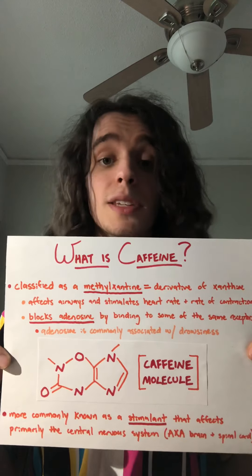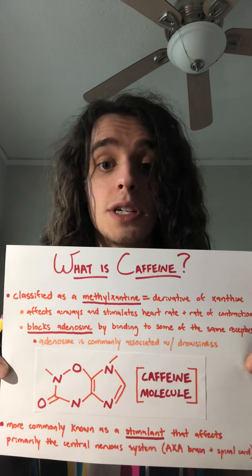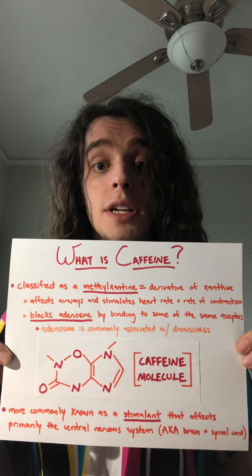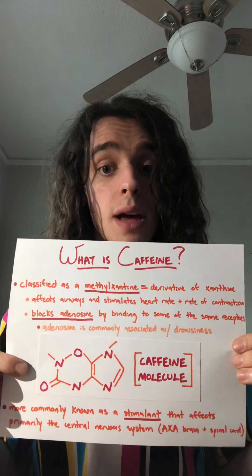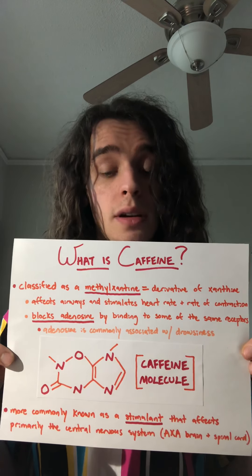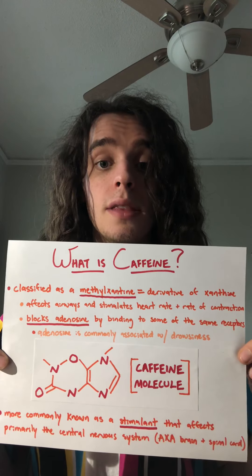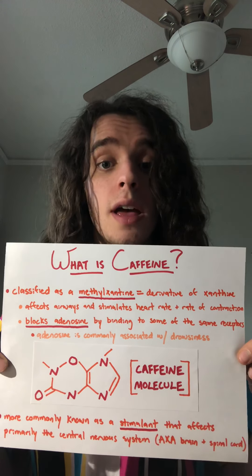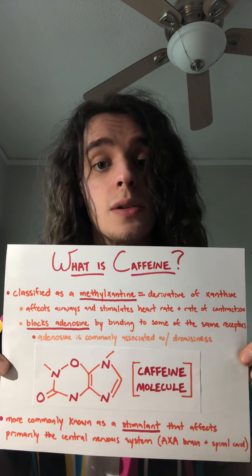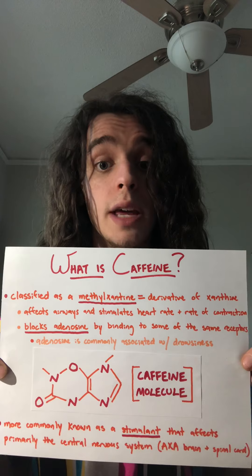Anyway, it is a methylxanthine, which is a derivative of xanthine, and it gets that classification due to its chemical compound — its molecular structure — which I have drawn, as you can see right here. This classification and structure affects not only how it interacts with other chemicals, but also parts of your body, which we will get into very briefly. In general, methylxanthines affect your airways, and also stimulate your heart rate and the rate of contraction.